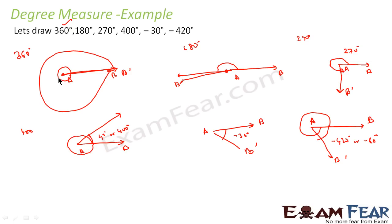To recap: for 360 degrees we did one complete round landing at the same point; for 180 degrees a half round; for 270 degrees three-quarters of a round. For 400 degrees, one full round plus 40 more. For minus 30, one step clockwise; and for minus 420, one full clockwise circle (360) plus 60 more equals 420 degrees.